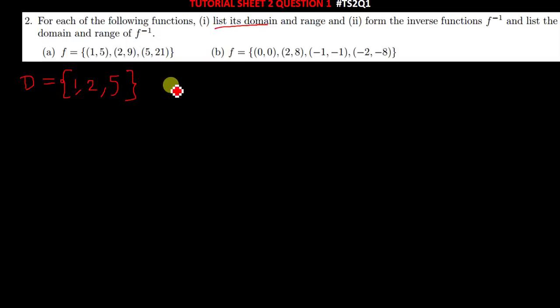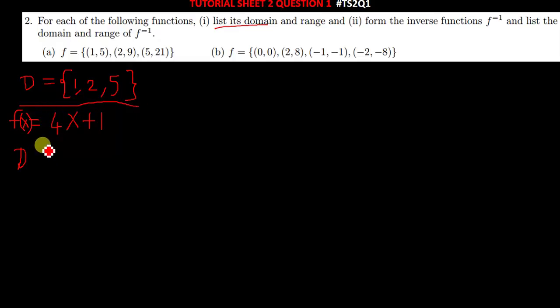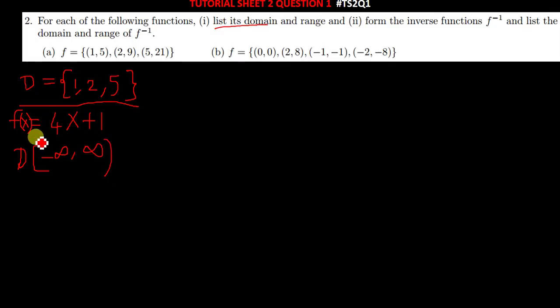Another way to find D is by first finding the function f. When you look at it: input one maps to five, two maps to nine. You can see this is the function f(x) = 4x + 1 — four times one is four, plus one is five. So if this is our function f(x), the domain can be any number from negative infinity to positive infinity.